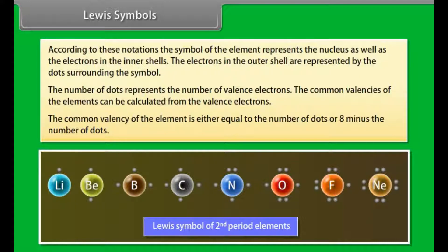For example, the common valencies of lithium, beryllium, boron and carbon are one, two, three and four respectively. While those of nitrogen, oxygen, fluorine and neon are eight minus the number of dots, that is three, two, one and zero respectively.